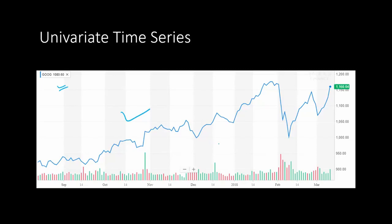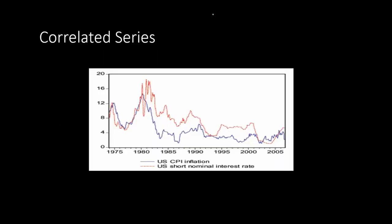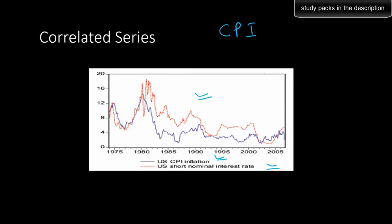Sometimes we need multiple series for better predictions — we can improve on the prediction by using multiple time series. Here is an example: we have the US CPI inflation data and the US short-term nominal interest rate. You can see both are highly correlated.